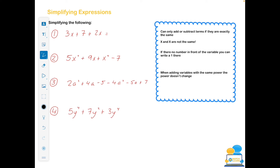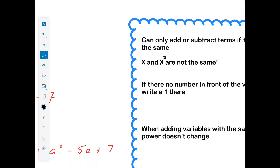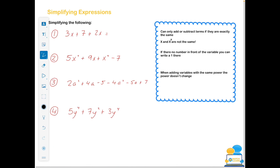The first thing we're going to look at is simplifying expressions. When the exam says simplify, these are basic examples but it's important we get the basics first. The key rule on the right-hand side here: you can only add or subtract terms if they're exactly the same. So x and x squared are not the same — if you see x and x squared you cannot add them together.